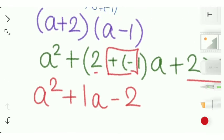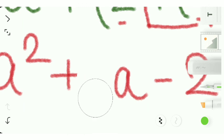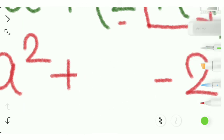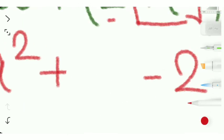Plus 2 into minus 1, which is minus 2, so we'll write minus 2. And 1a is a, so it's really unnecessary to write 1, so we'll just write a.